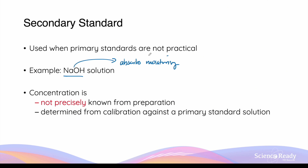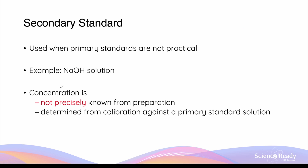Because sodium hydroxide absorbs moisture, we can never know its exact chemical composition. As a result, to determine the actual concentration of a sodium hydroxide solution, we need to calibrate it against a primary standard solution — for example, through titration, which will be discussed in Year 12 Chemistry. Unlike a primary standard, the concentration of a secondary standard is not precisely known from its preparation; it is always determined from calibration.